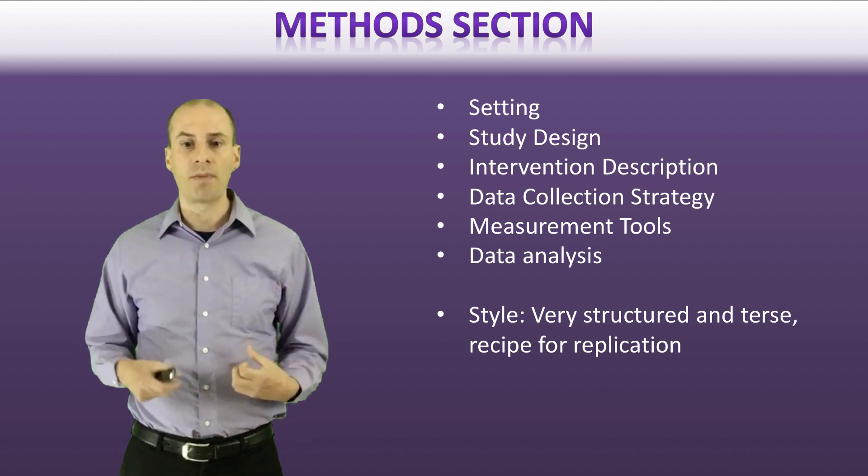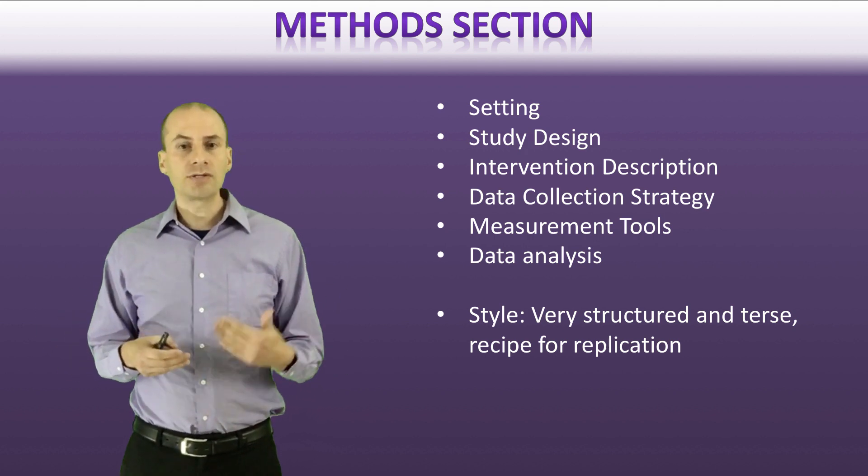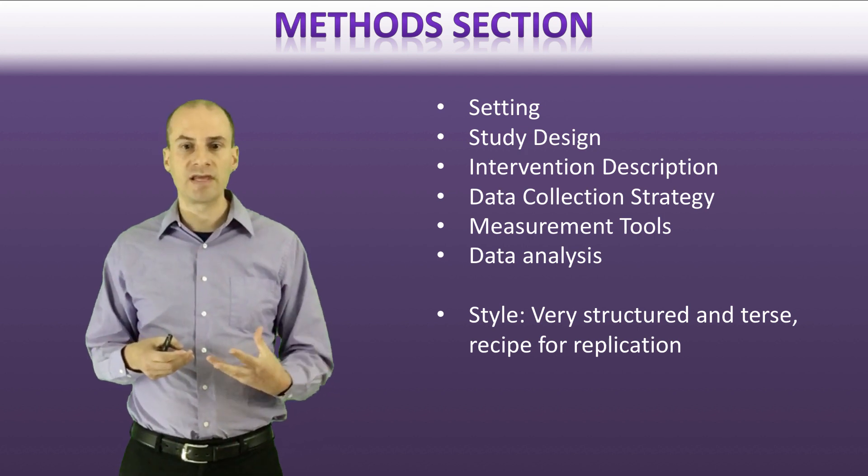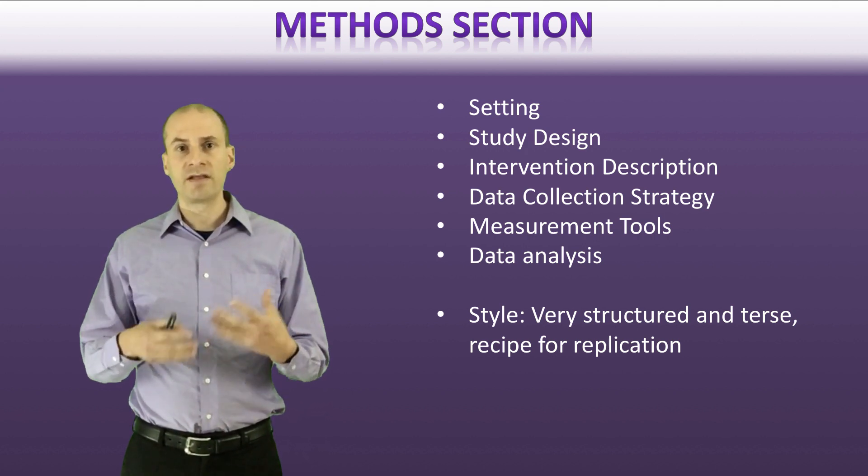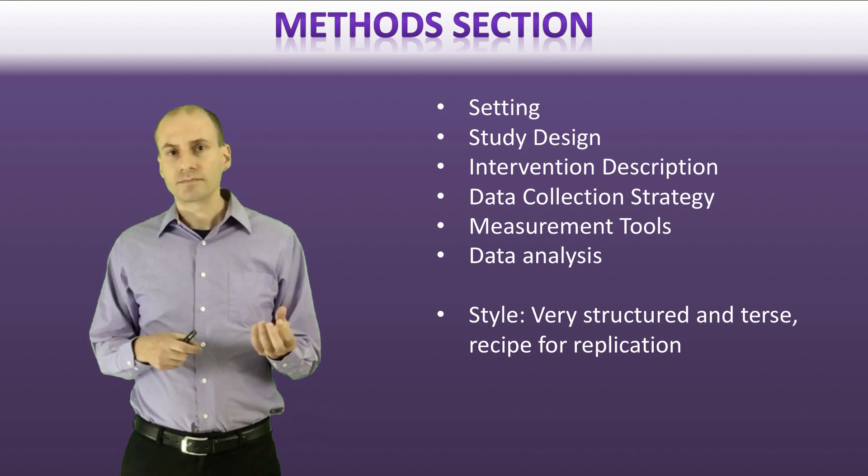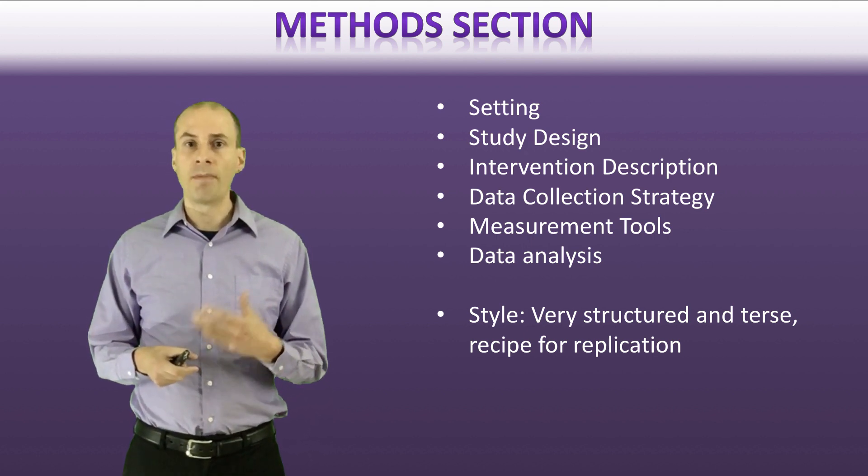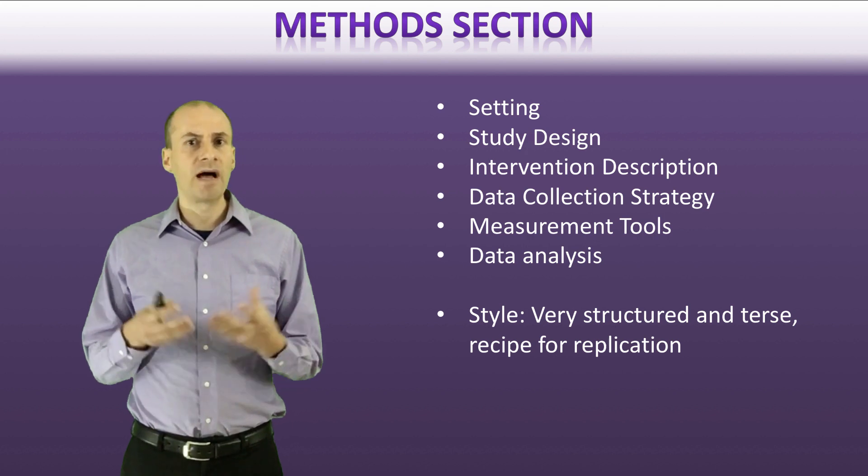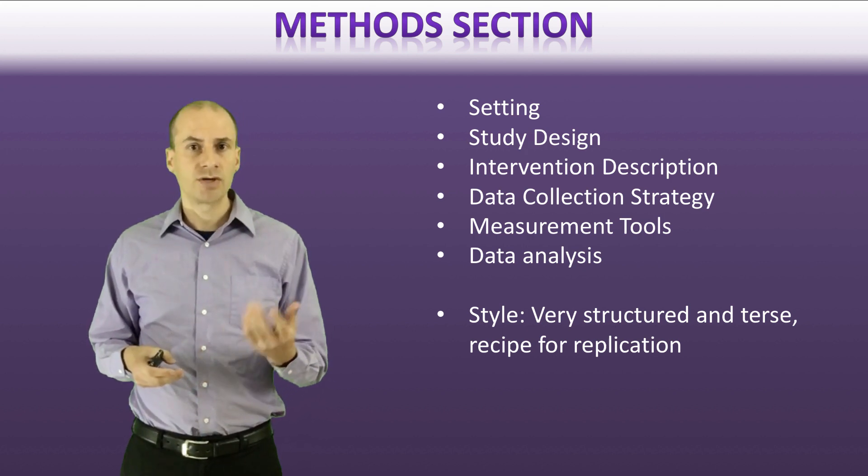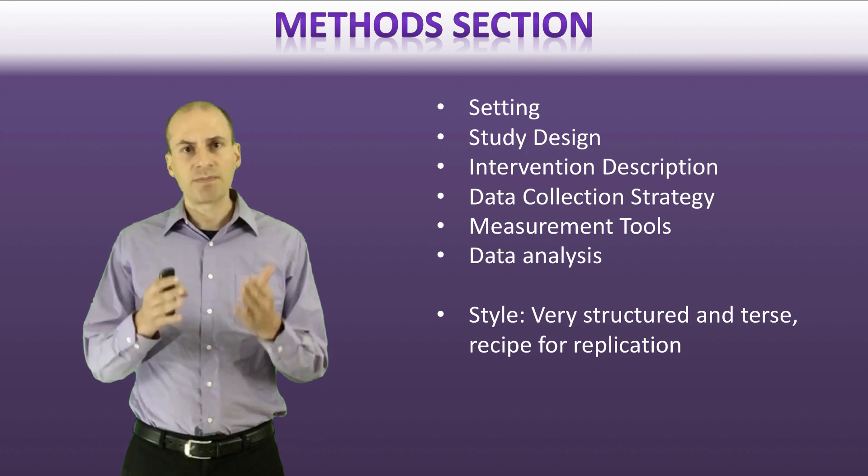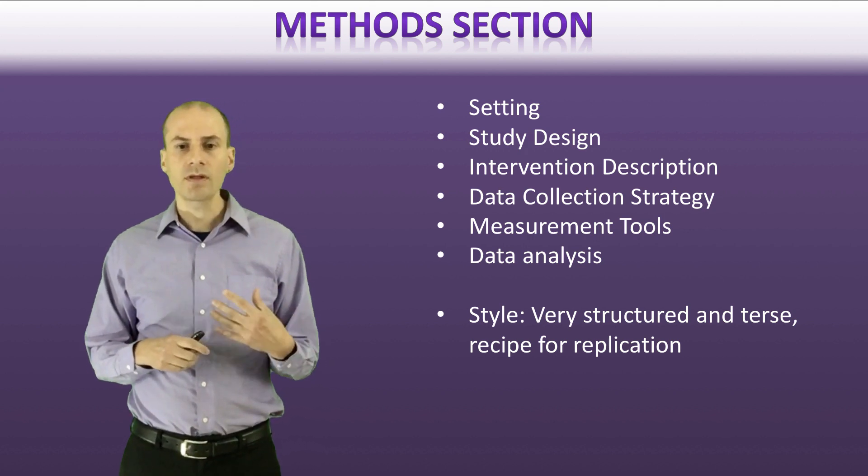You'll also find typically soon after the setting, you'll find some information about the study design. Now this is an explanation of how the study was set up, the structure of it, and the different approaches that were used. Now if the study actually used a specific intervention, a healthcare procedure of some sort or a public health intervention of some sort, they'll typically explain what intervention was done. Did they go out into the community and provide information about a healthcare service, or did they do a specific medical procedure? They'll explain what was done so that you as a reader can understand that as you're going forward in the paper.